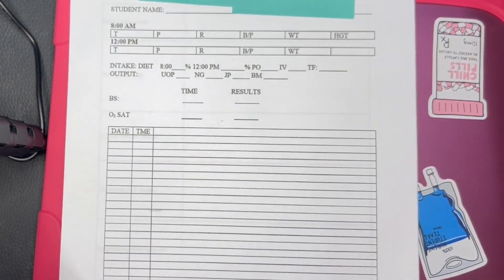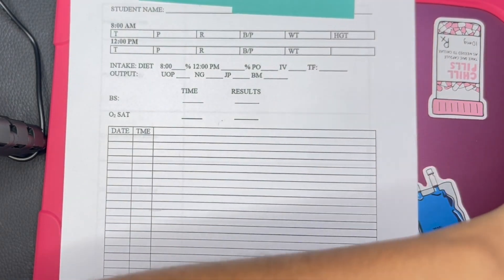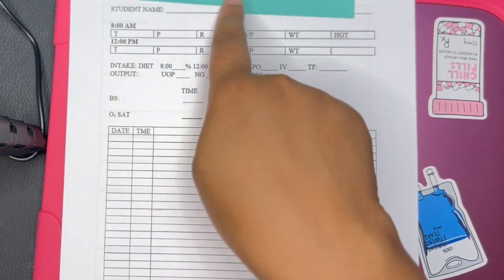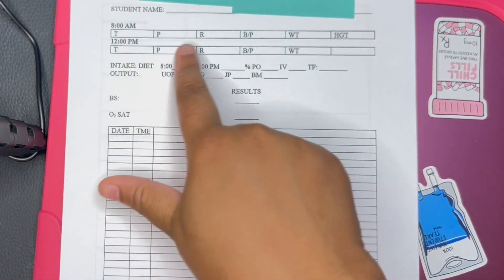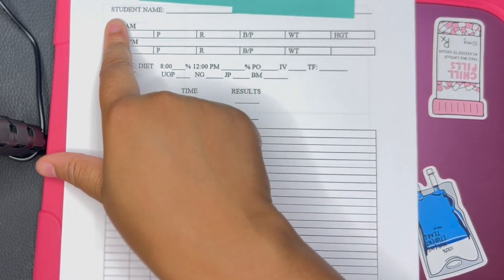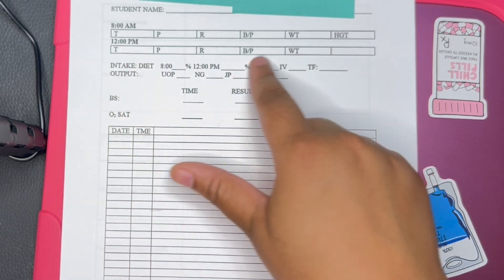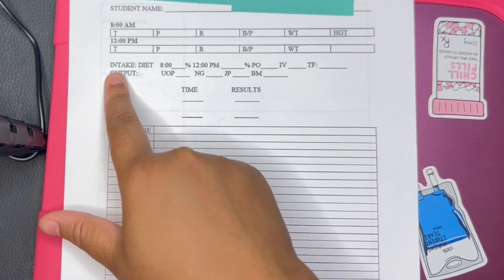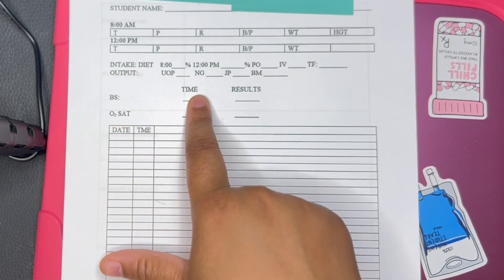This is the actual nurse's notes. You will put your name and all that stuff. Then the vitals, whenever you take it. Let's say you take it at eight, you'll put the patient vitals here, then your next set of vitals there. If your patient is on strict I's and O's, you will put the information here and their output, their O2.